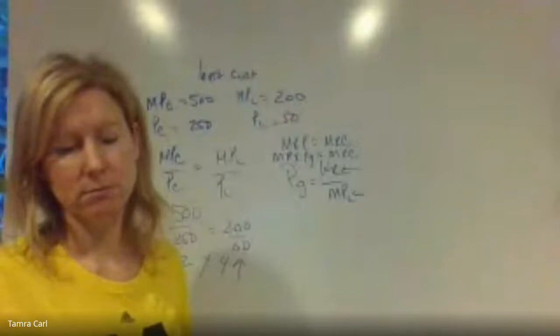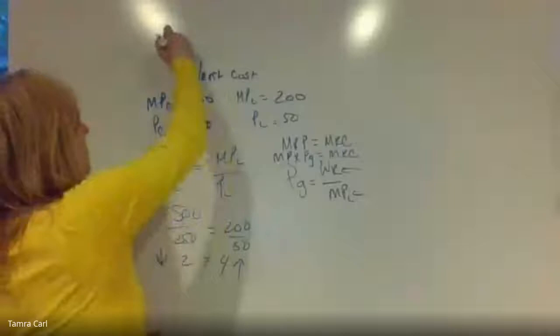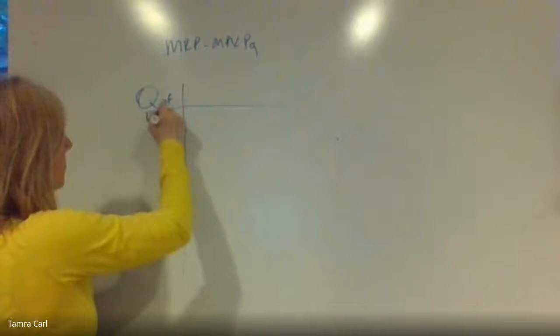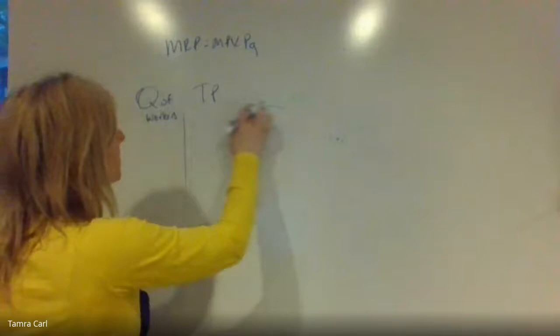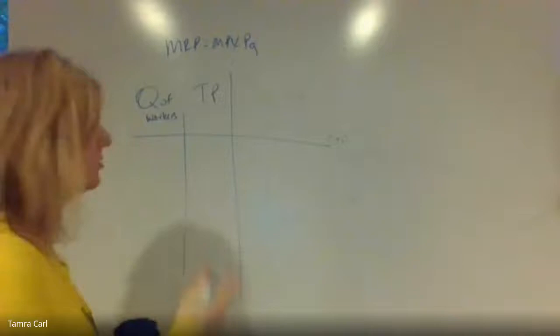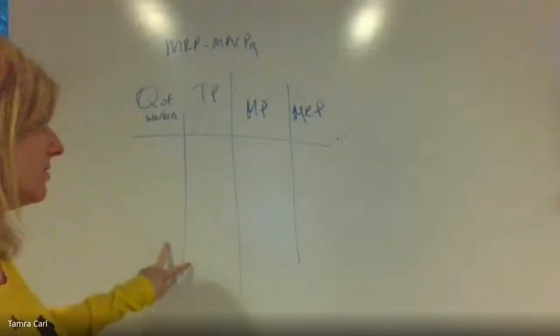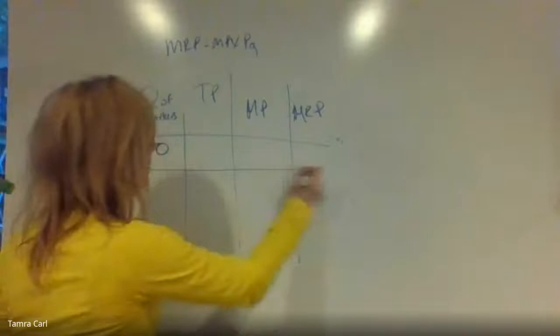Those are the main things I think about for Unit 5. For perfect competition, MRP equals marginal product times price of the good. They could give you a table with the quantity of workers and their total product — the amount being made. When you see that table, you should automatically add a marginal product column and an MRP column. Let me set up an example with four workers.